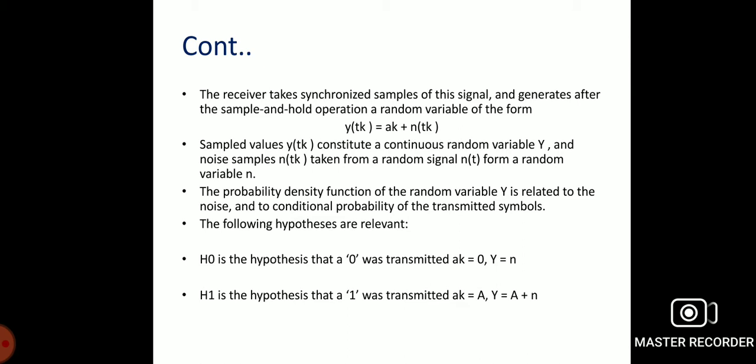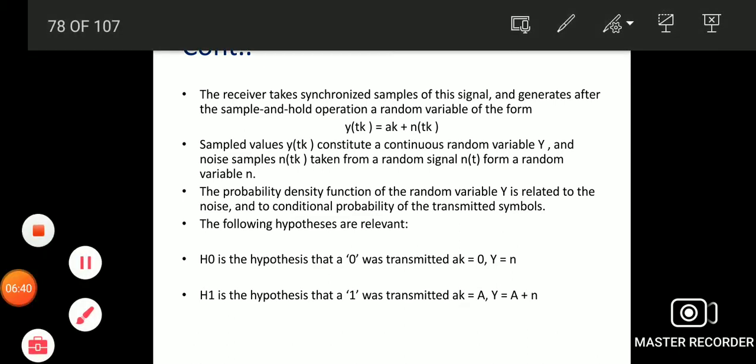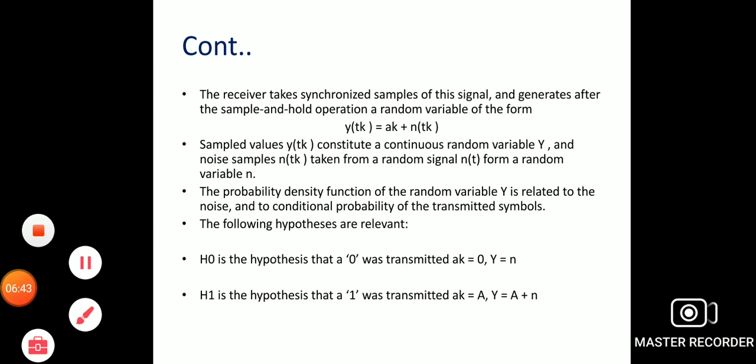The probability density function of the random variable Y is related to the noise and to the conditional probability of the transmitted symbol. The hypothesis H₁ represents that a 1 was transmitted, and hypothesis H₀ represents that a 0 was transmitted. When α_k = α, y_k = α + 1.